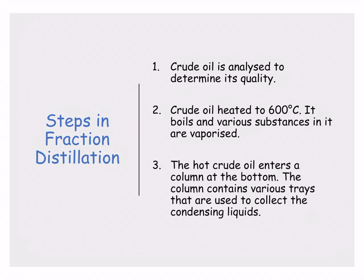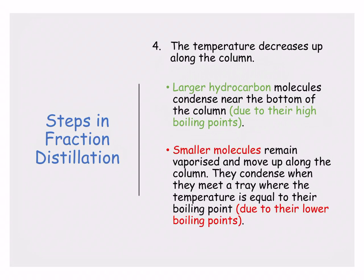The column is maintained at a very high temperature at the bottom, and as you go up, the temperature decreases. The larger hydrocarbon molecules condense near the bottom because they have really high boiling points, whereas smaller molecules remain vaporized and travel all the way up. When they meet a tray equal to their boiling point, they begin to condense. So smaller chain, lower boiling point hydrocarbons are found at the top, and long chain, higher boiling point hydrocarbons are found towards the bottom.